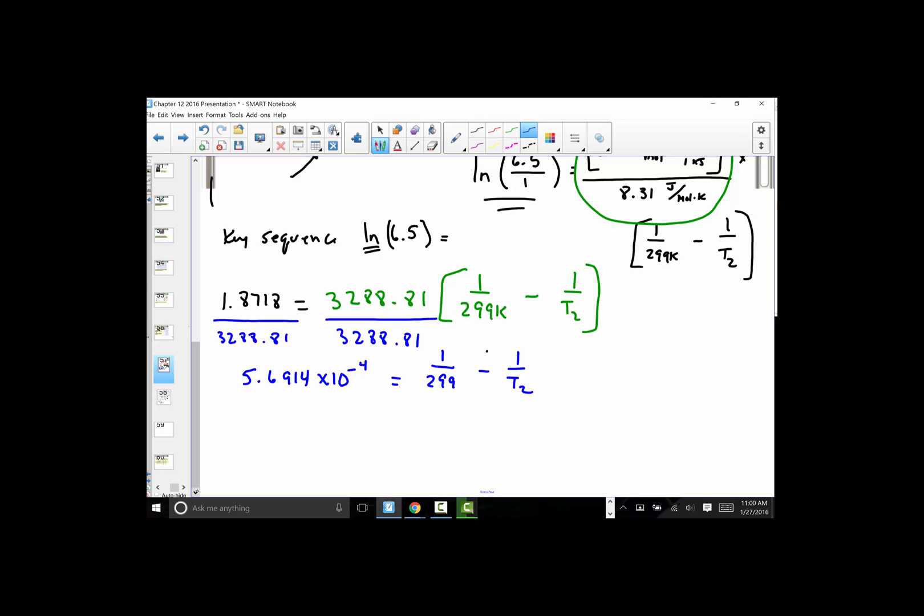And that's equal to 1 over 299 Kelvin minus 1 over T2. Now, this expression, the reciprocal of 299, I'm going to bring it over here to the left side. I'm actually going to subtract from both sides. Since this is positive, I have to subtract it from both sides.